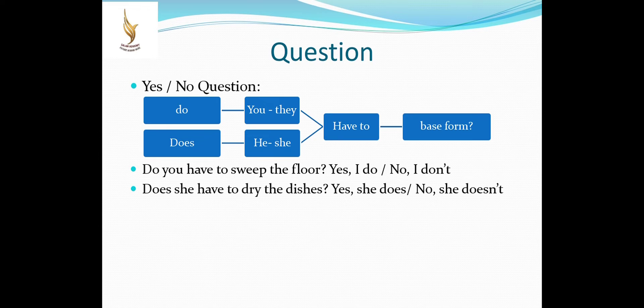Questions. Yes or no questions. We start with the helping verb do or does. Then the subject and have to. Do you have to sweep the floor? Yes, I do. No, I don't. Does she have to dry the dishes? Yes, she does. No, she doesn't.